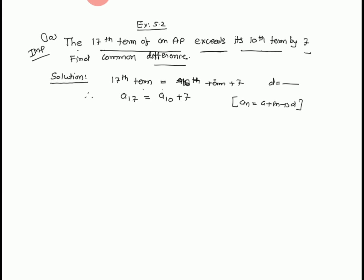17th term equals 10th term plus 7. Exceeds means more. a₁₇ equals a₁₀ plus 7. But we know the formula aₙ equals a plus n minus 1 into d.